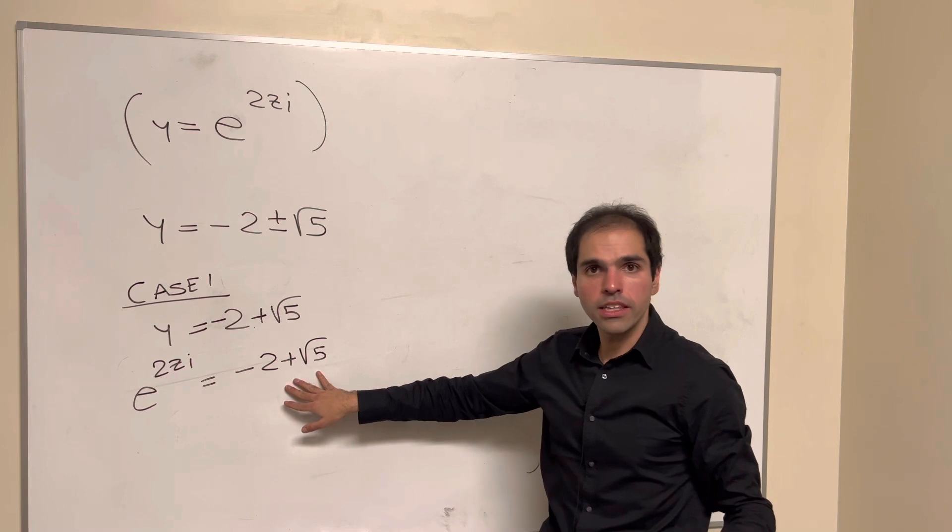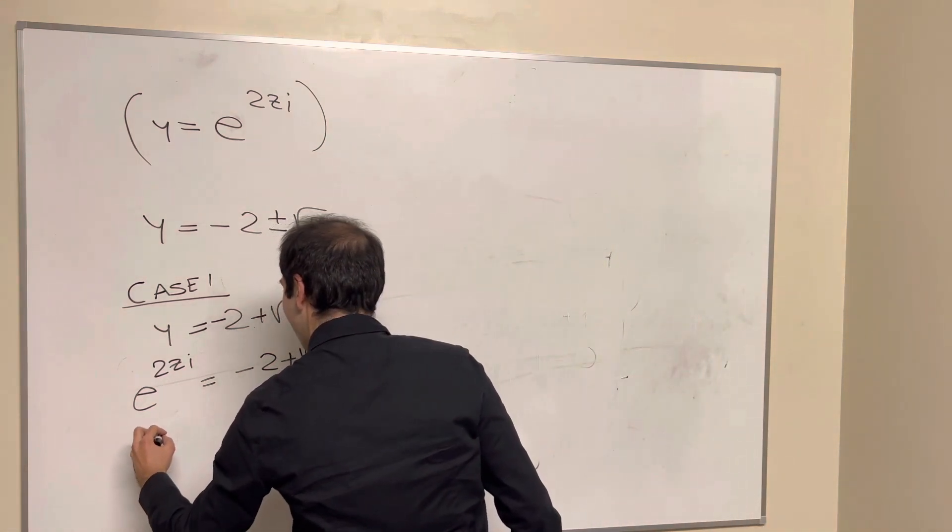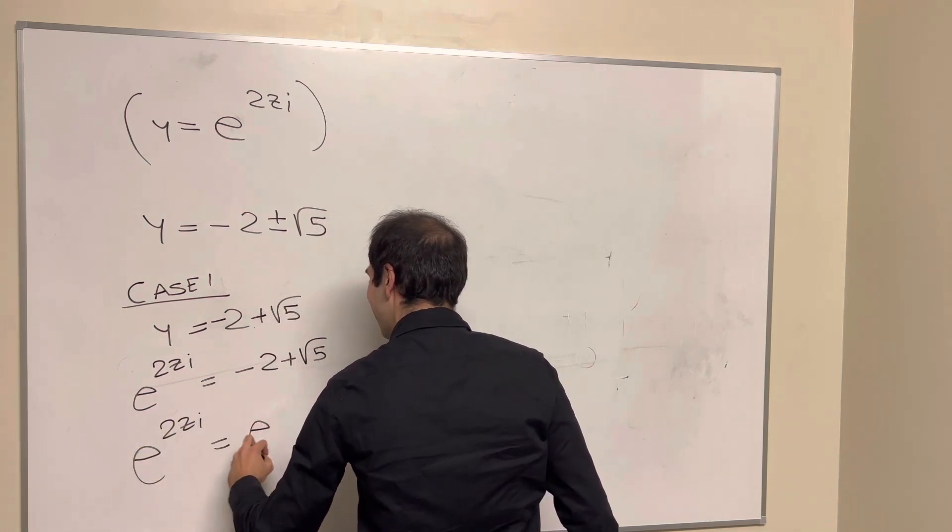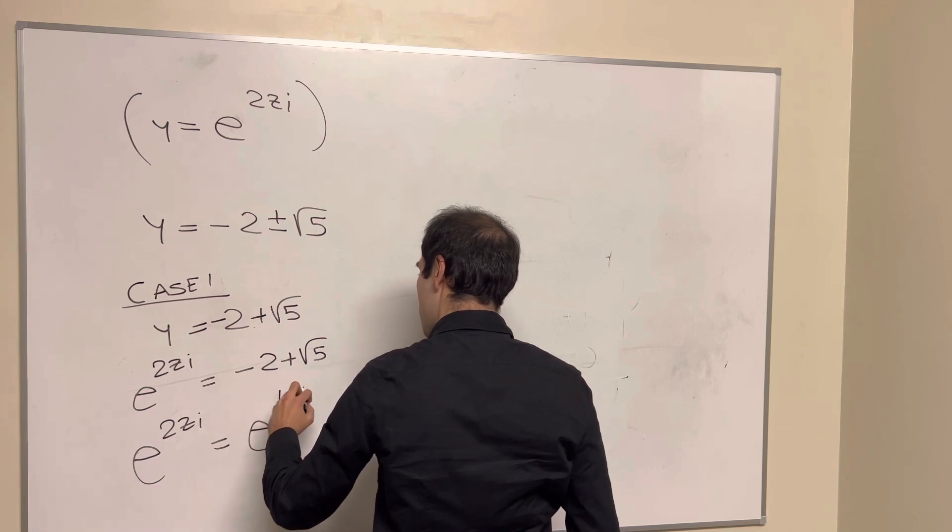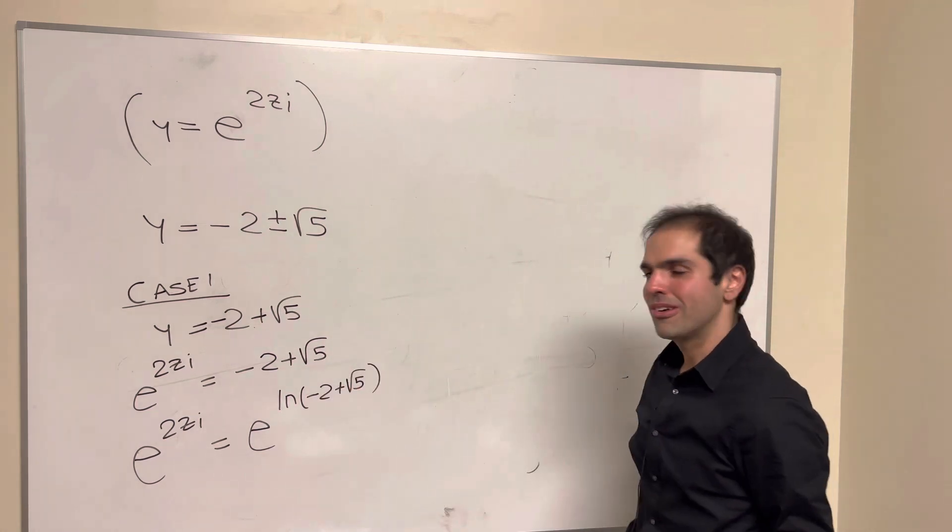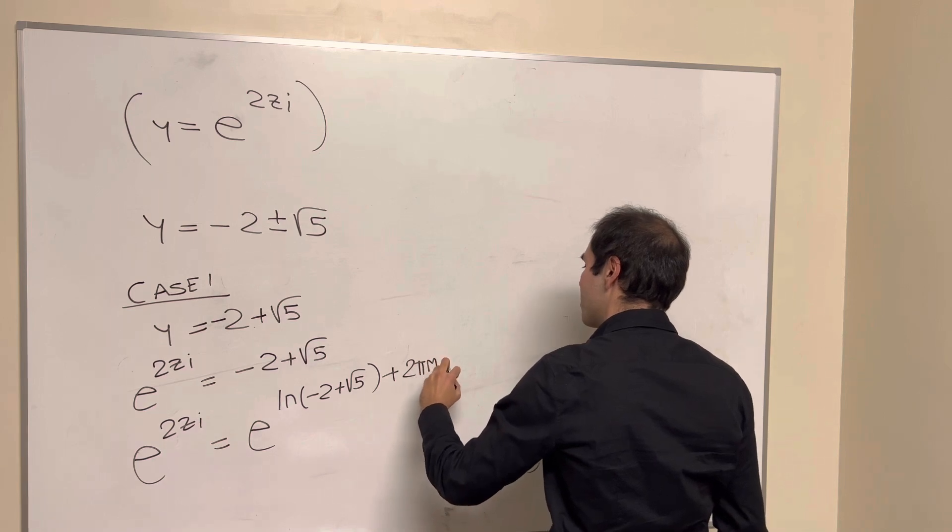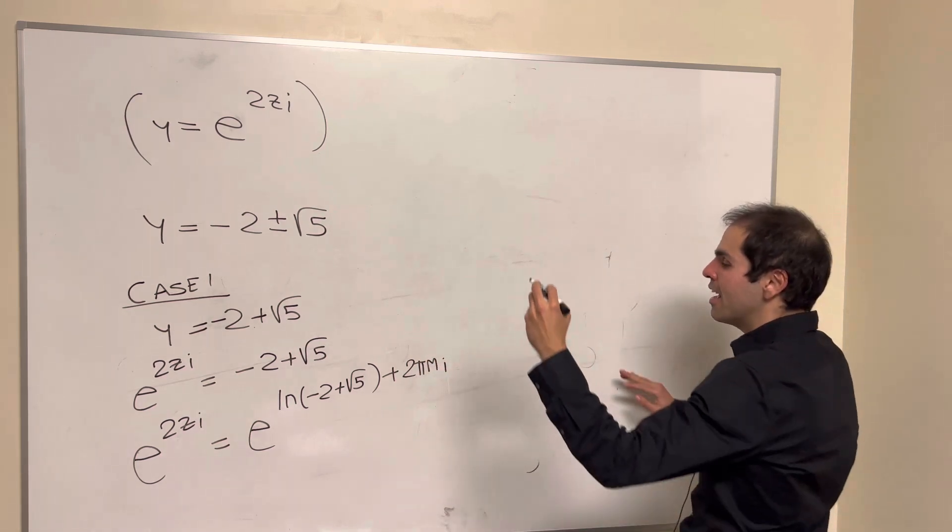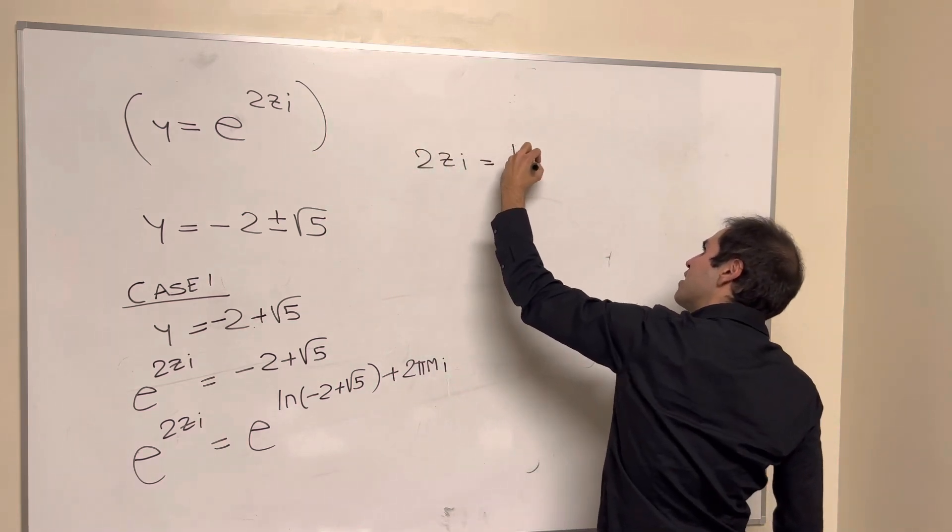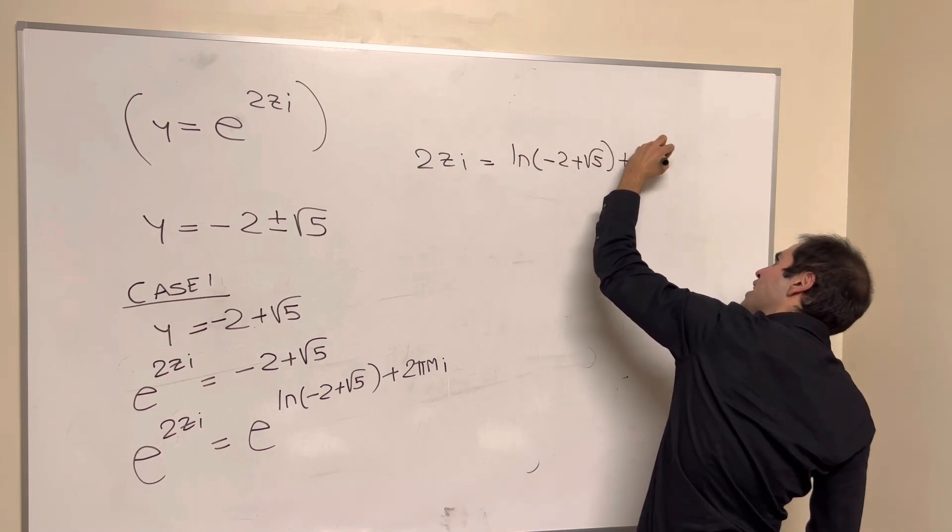So here we want to write this as an exponential function using ln. So e to the 2zi, that is e to the ln of minus 2 plus square root of 5, plus multiples of myself, so plus 2 pi mi, where m is any integer. And therefore, 2zi becomes ln of minus 2 plus square root of 5, plus 2 pi mi.